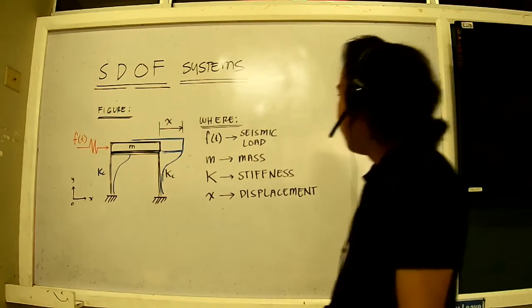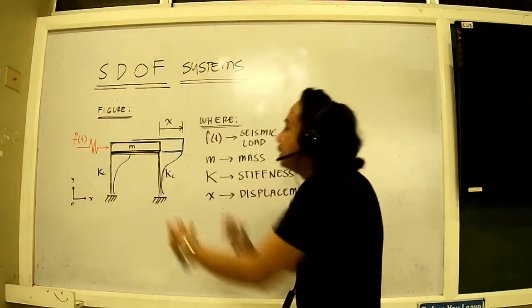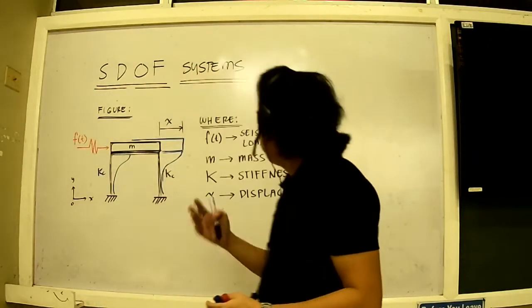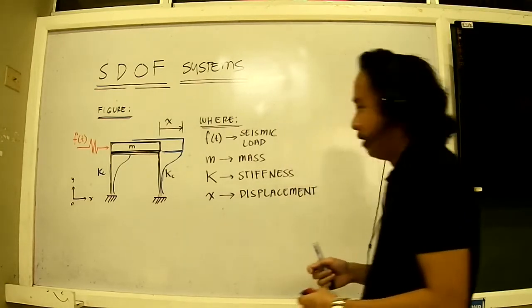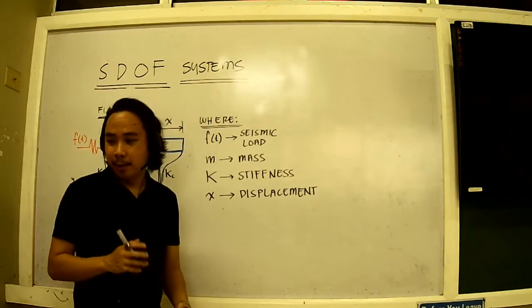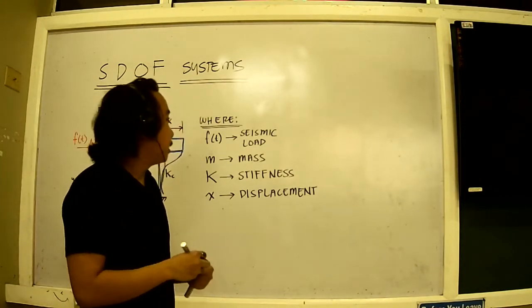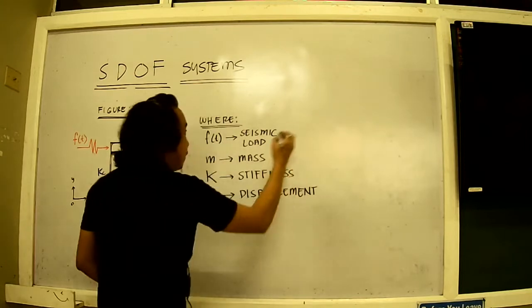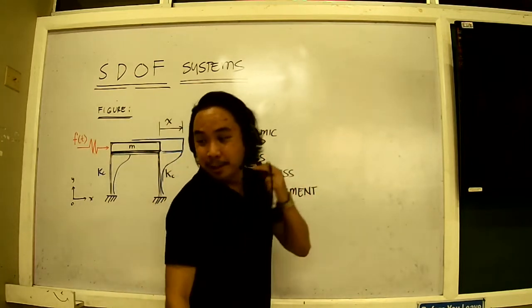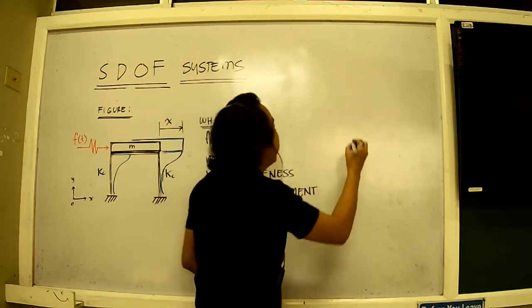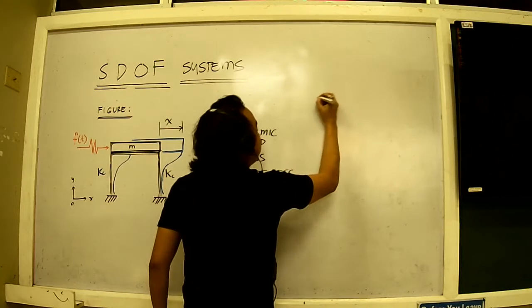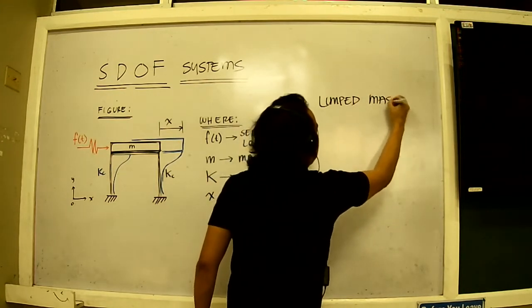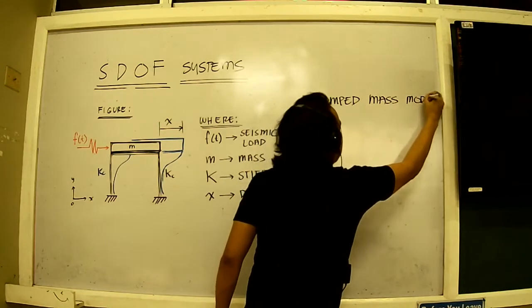So, when we have this, we cannot analyze this figure directly. I find it much cumbersome. So, I would like to somehow revamp this into a more easier interpretation of things. I would like to remodel this as a lumped mass model.